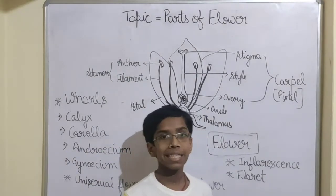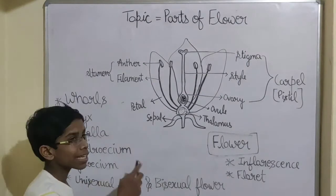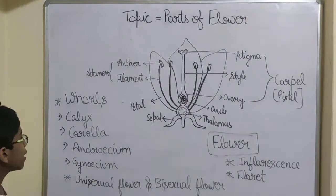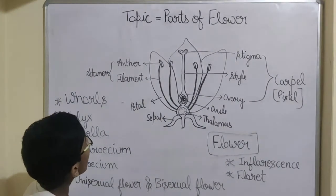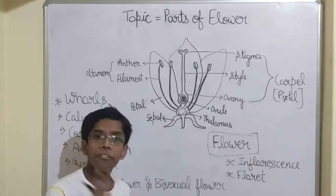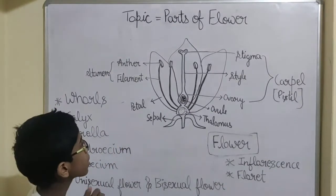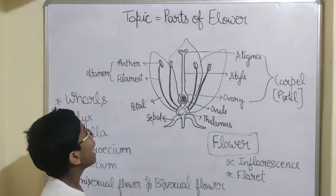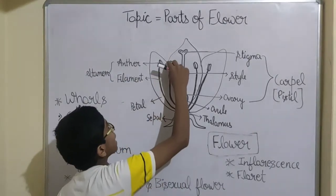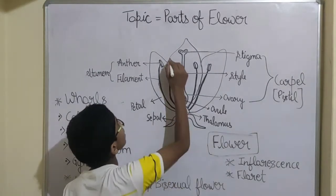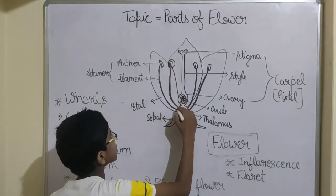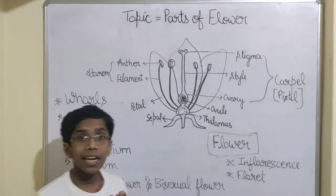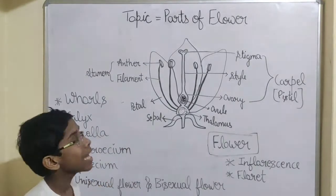Our next whorl is androecium. It is the third whorl and it is the male reproductive part of a plant. Androecium is the third whorl and it consists of anther and filament. Filament is a small tube, and it has a tip which has the anther.